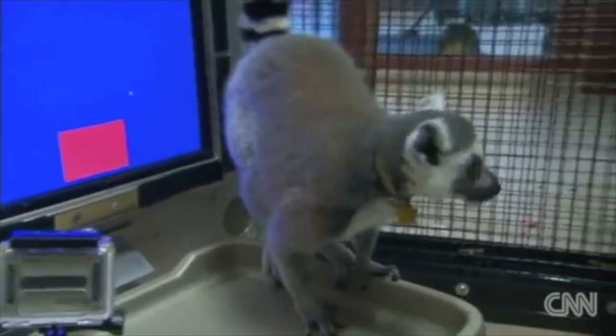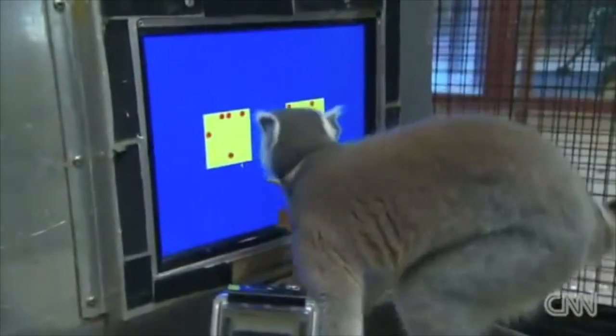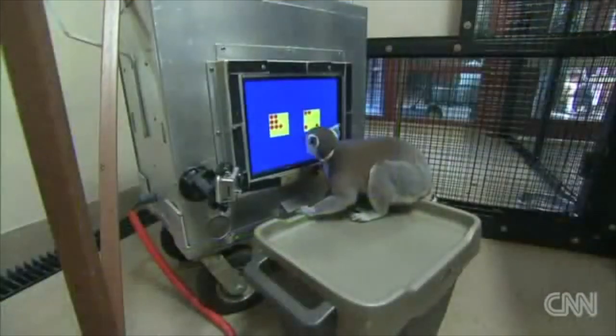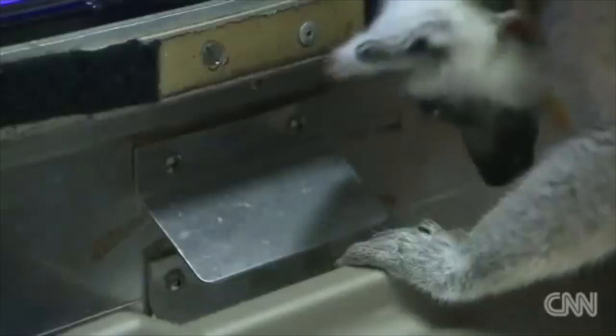This lemur has learned to recognize which square has more red dots. He uses his nose and if he picks the right one, which he mostly does, a sugar pellet drops down. Lemurs love sweets.